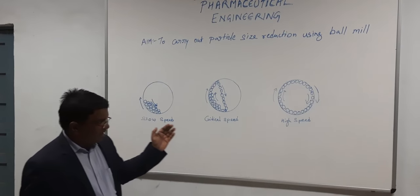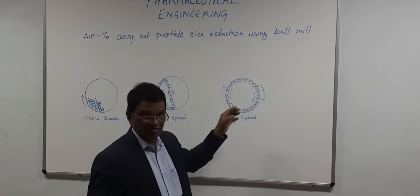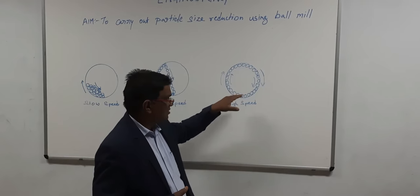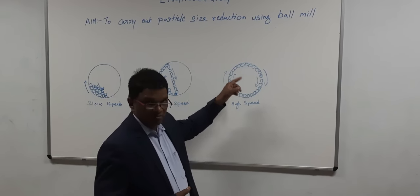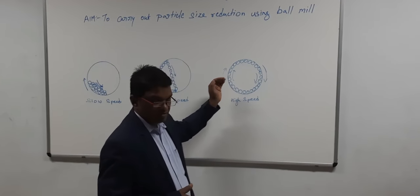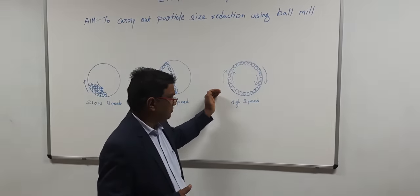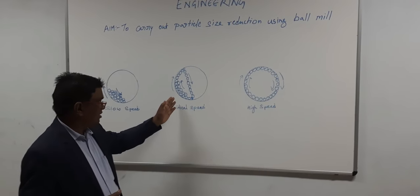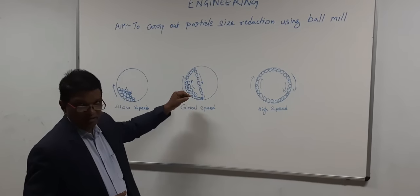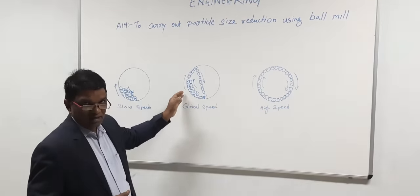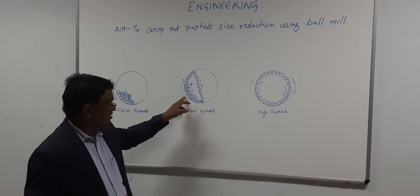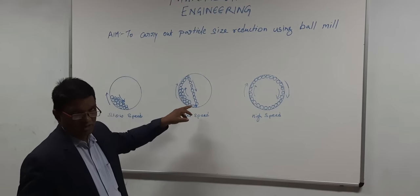When we talk about very high speed, if the ball mill is rotating at very high speed, the ball will get stuck to the surface of the mill and rotate with it. We don't have any sliding or impact in this case. But at critical speed, the ball will lift to a certain height and fall down, and both impact and attrition processes will take place. If it is sliding, attrition takes place; if it is lifting and falling, the impact process takes place.